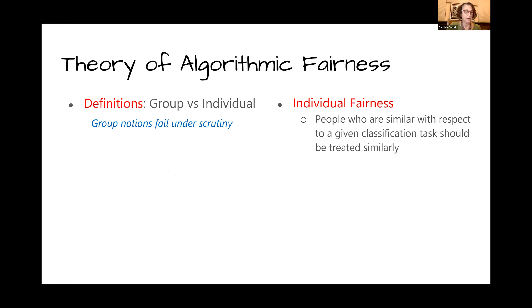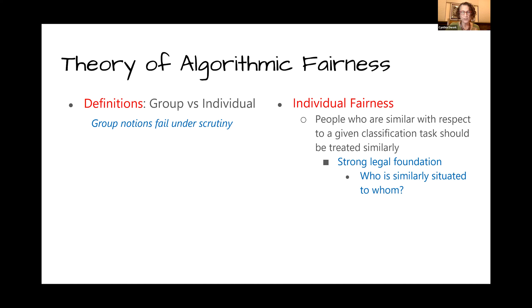Individual fairness requires that people who are similar with respect to a given classification or scoring task should be treated similarly by the algorithm. That similarly situated people should be treated similarly is a pervasive notion in law. This framework is powerful and admits lots of nice math, but you need some way of determining, for a pair of individuals and a given task, how similar those two individuals are — in other words, it needs a similarity metric. For this reason, individual fairness is often called metric fairness.